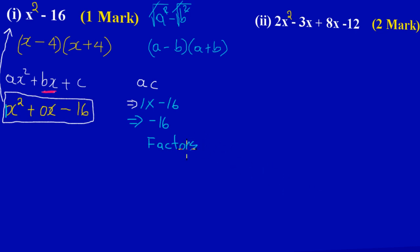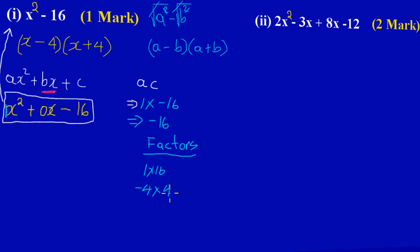Let's list our factors of negative 16. One times 16 gives 16, and four times four gives 16. But positive four times positive four gives positive 16, and I need negative 16, so I change the sign on one of my fours: negative four times positive four gives negative 16. When I add negative 4 and positive 4 I get zero, which is my b value. These are the two factors I'm looking for.